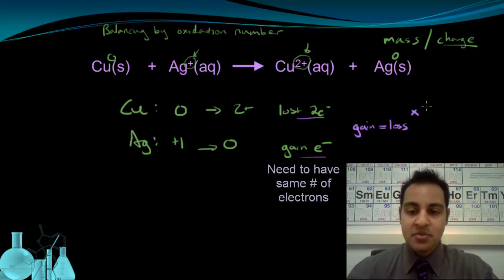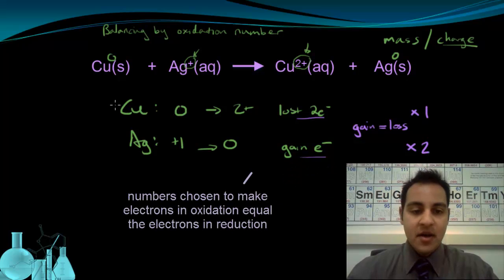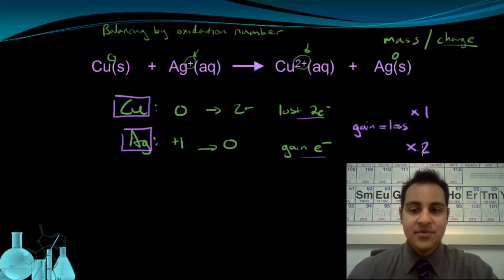So I have to do something to these two amounts of electrons to get them equal to each other. So for this case, I'm going to multiply the first one by one, and I'm going to multiply the second one by two. And this times one applies to the copper, and the times two applies to the silver.